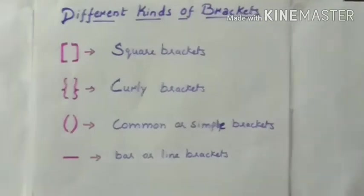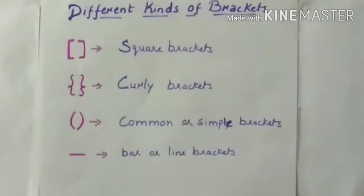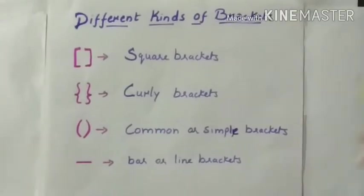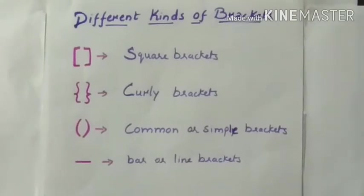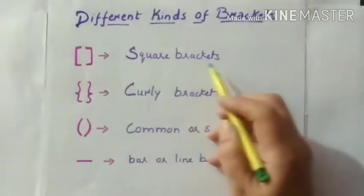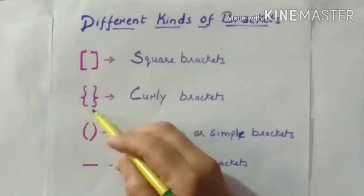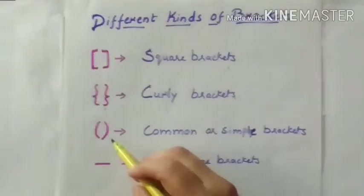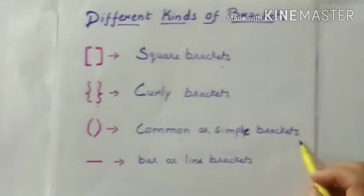Different kinds of brackets. Now as I have told you in BODMAS rule B stands for brackets. So there are different types of brackets. Now we can see here this is square brackets. This is curly brackets. And this is common or simple brackets. And this is called bar and we can say line brackets.